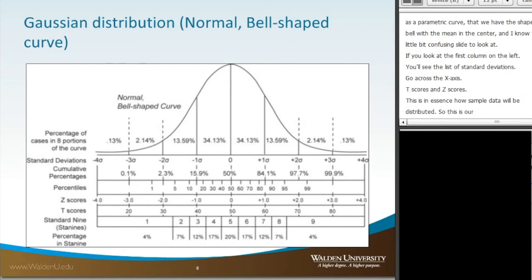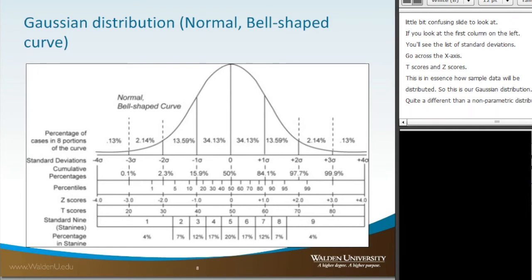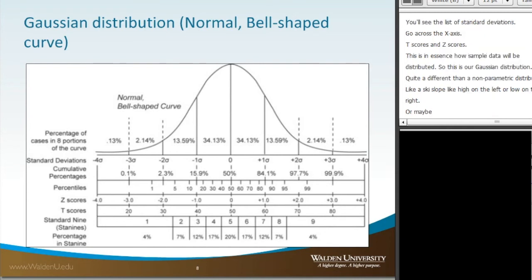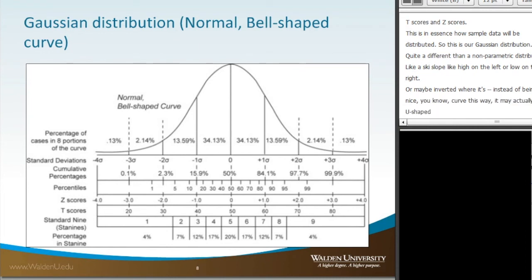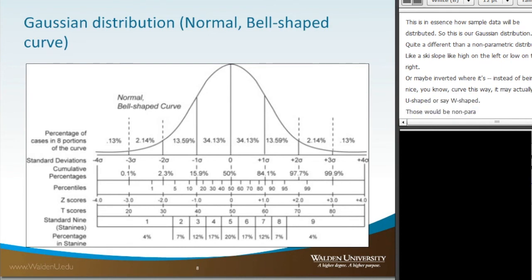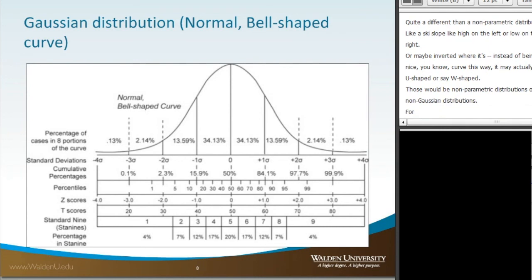This is quite different from a non-parametric distribution, which may look like a ski slope — high on the left and low on the right — or maybe inverted, or U-shaped, or W-shaped. Those would be non-parametric or non-Gaussian distributions. For the one-sample t-test, we want the sample data to form this nice bell-shaped curve.